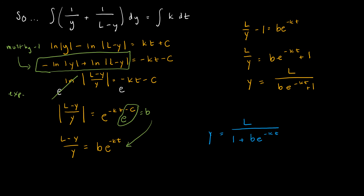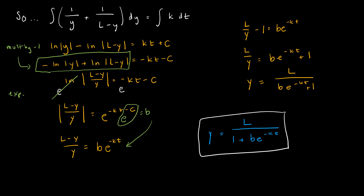Now I'm trying to get Y by itself. I rewrite (L minus Y)/Y as L/Y minus 1, then add 1 to each side, multiply by Y, and divide by (B·e^(−KT) + 1). That is the solution. This is how it's written in your book — they've just switched the order of 1 and B·e^(−KT). So hopefully that was of interest; I always like to know where things came from.